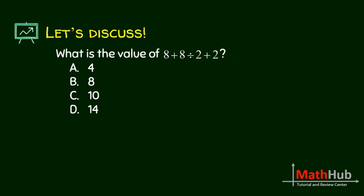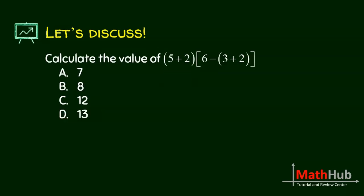What is the value of 8 plus 8 divided by 2 plus 2? You have addition and division. Which one will come first? Division comes first, it's higher in our PEMDAS. So this becomes 8 plus 4. 8 plus 4 is 12 plus 2, you get 14.